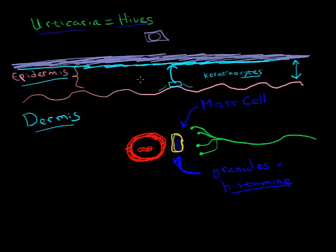Because hives, as we'll see in a minute, are intimately related to mast cell chemicals. So what happens in hives? The mast cell, by the way, is one of the many cells of the immune system.